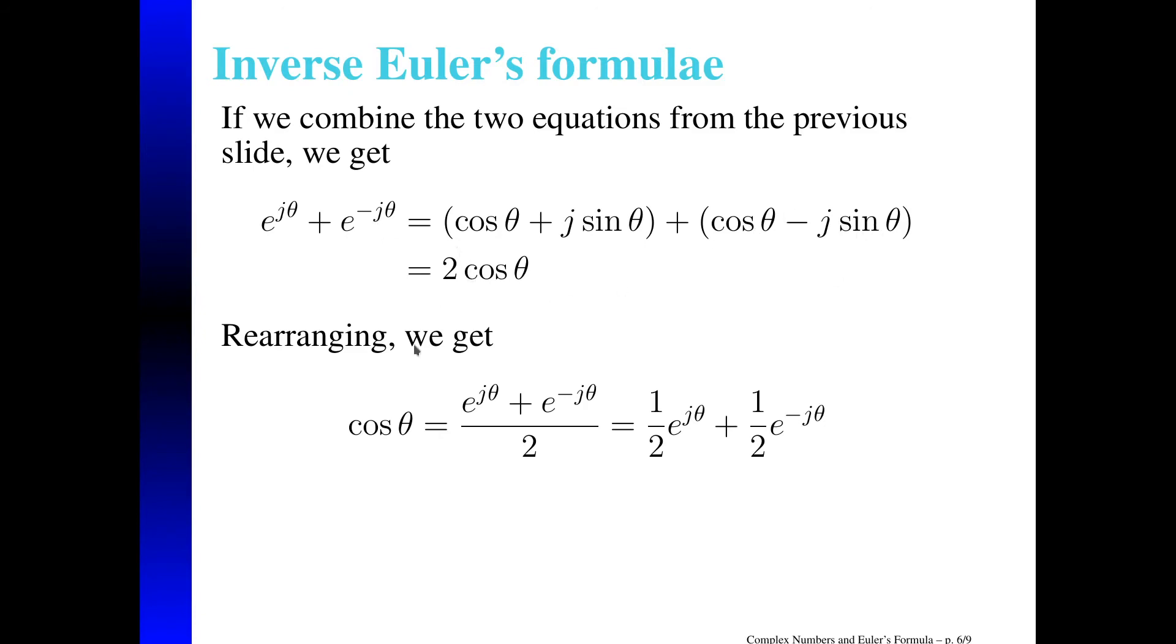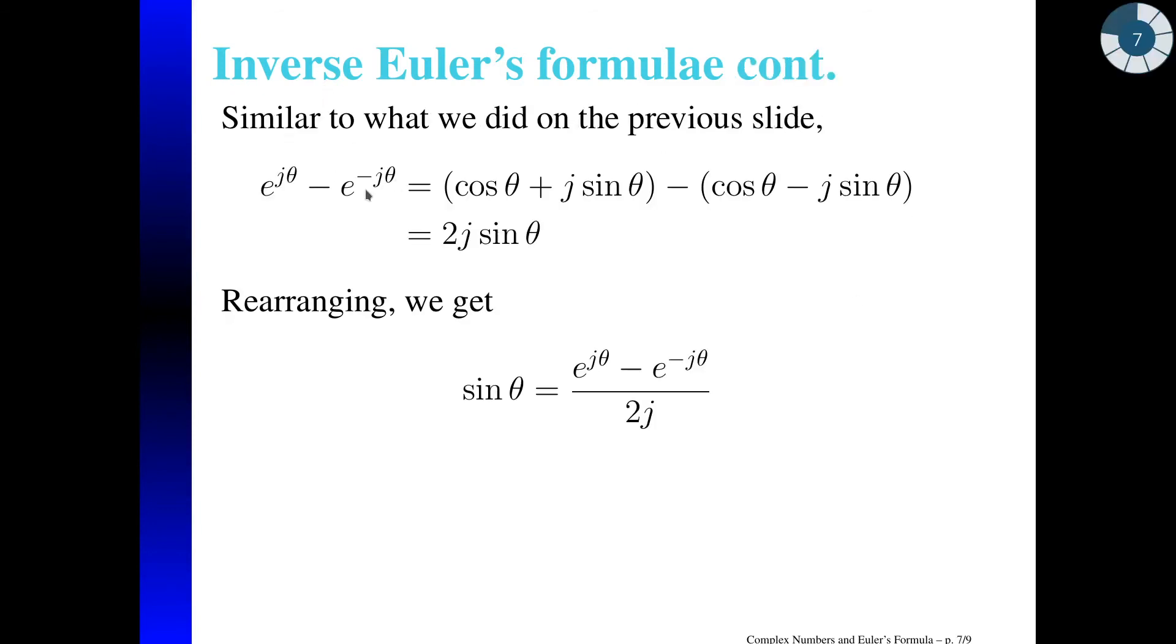And then rearranging in terms of cosine of theta, we can see that cosine of theta is equal to the sum of two complex exponentials. What's really interesting about that is that E to the J theta is a complex number, and E to the minus J theta is also a complex number. But these parts cancel out because they're complex conjugate pairs. So I get this right here. And this is going to be important going forward for some of the things we'll look at.